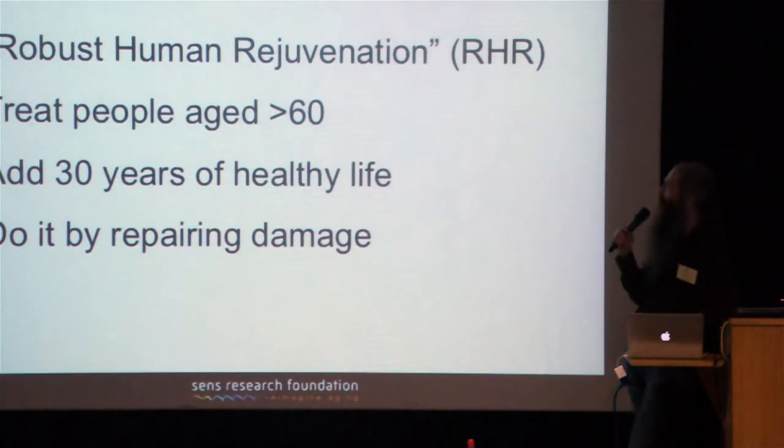So the core goal that we have, of course, is to get these technologies to work. And the consequence of doing so, in my view, would be what I write here. I've used this term, robust human rejuvenation, to describe it. I claim that what it's going to be able to do is to add roughly 30 years of healthy life to the lives of people who are already in middle age, 60 or possibly older, when the therapies are first administered.